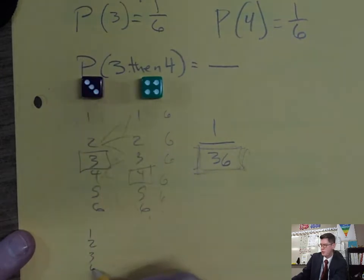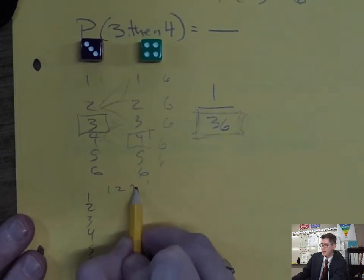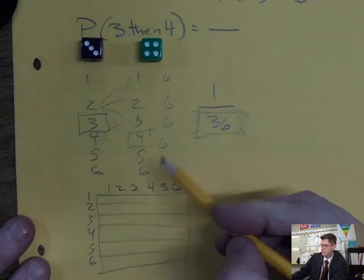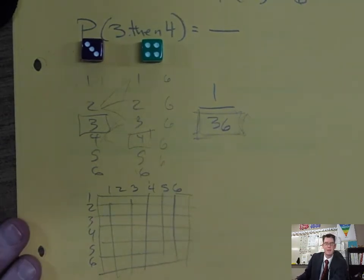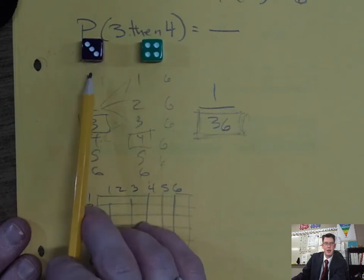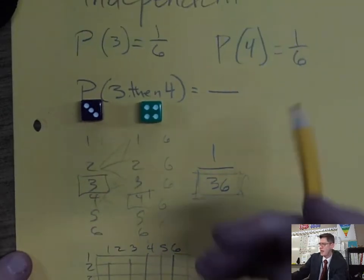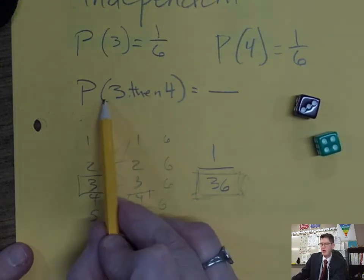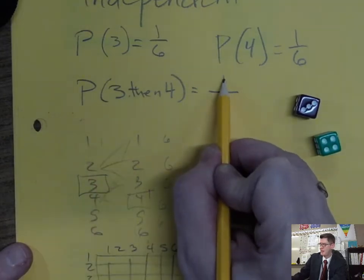Sometimes people map it out: on the first die I could get one, two, three, four, five, or six, and on the second die one, two, three, four, five, or six. If you mapped all those out, each combination is a possibility — you can see there are 36 possibilities, and only one of them is a three first and then a four.